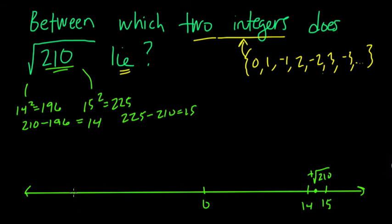The negative root will be the opposite of that. Here is negative 14. Here is negative 15. And, again, it's a little bit closer to negative 14. So it's negative 210, negative root of 210. So both of these roots squared will give you 210.